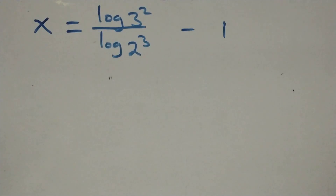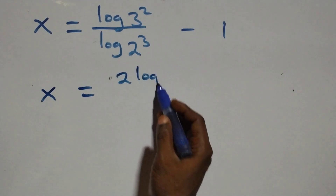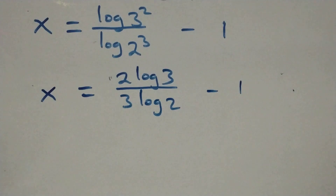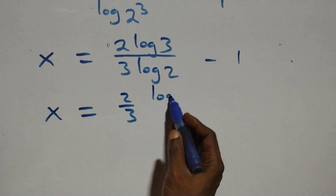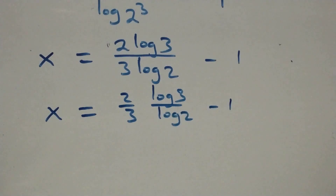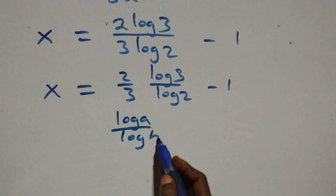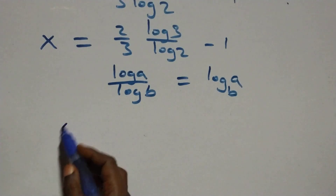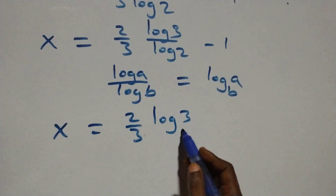Next step: we apply the power rule of logarithms again. The exponent 2 comes out from log(3²) and the exponent 3 comes out from log(2³), giving x equals 2 log 3 over 3 log 2, minus 1. We can write this as x equals 2 over 3 times log 3 over log 2, minus 1. Now, applying the change of base formula — log a over log b equals log_b(a) — this becomes x equals 2 over 3 times log₂3, minus 1.